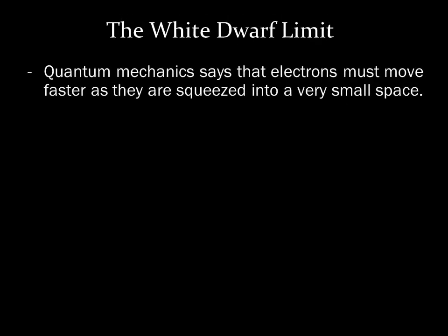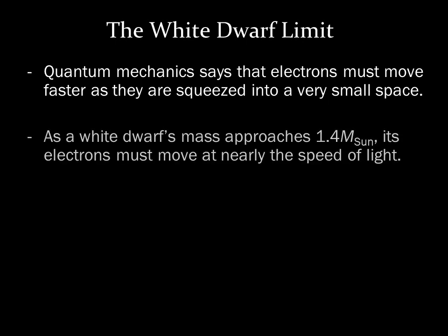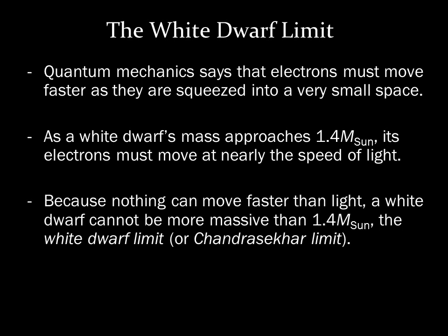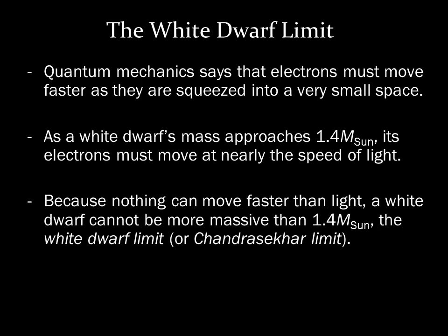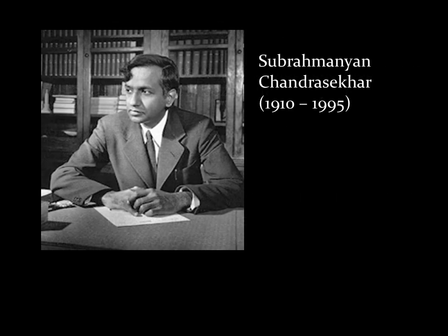Electrons inside a white dwarf are moving incredibly fast. The more massive the white dwarf, the faster the electrons move, but there is a limit to their speed. Theoretical calculations show that electron speeds would reach the speed of light in a white dwarf with a mass of about 1.4 solar masses. Because nothing can travel faster than the speed of light, no white dwarf can have a mass greater than 1.4 solar masses. This mass is known as the white dwarf limit, also called the Chandrasekhar limit, after the scientist who first calculated it.